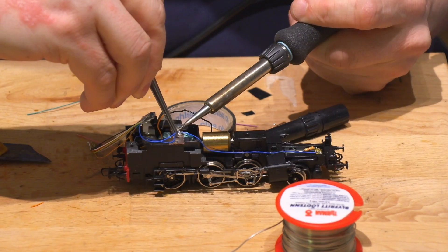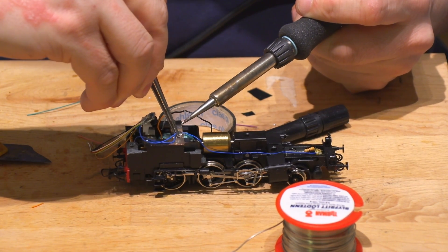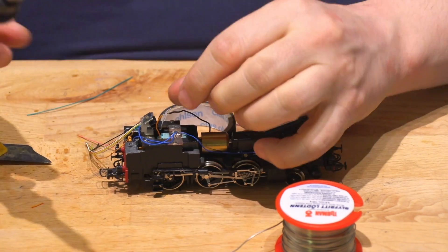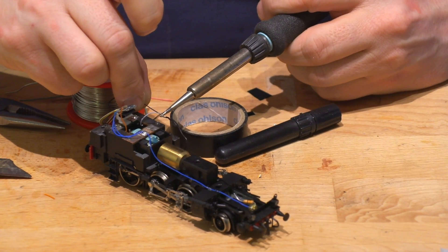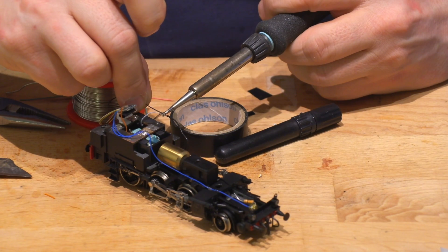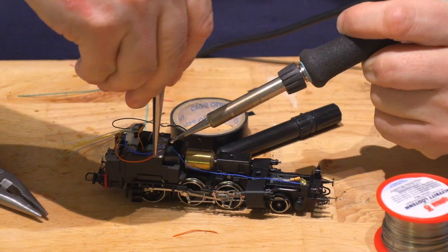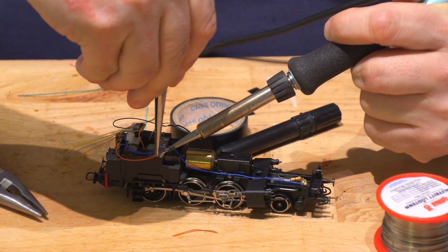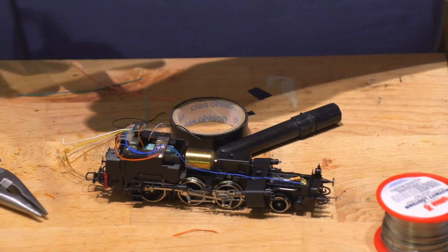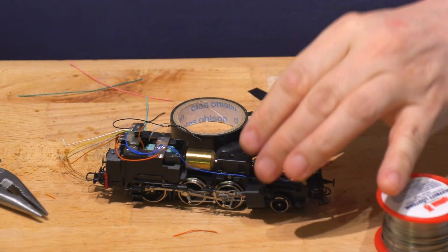We have to cut all the wires to the correct length as there is not much room. Then solder all the connections. For the track connection we use the original black wire for the left side, and the red wires are soldered where we can have a connection to the chassis.